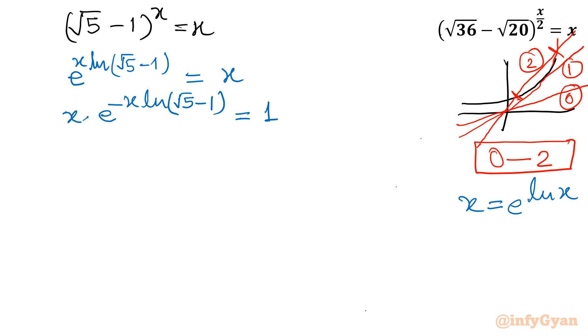Now next step I will consider. See its exponent is negative x ln root 5 minus 1. Here only x. So what is missing? I will multiply by that. So minus ln root 5 minus 1. Similarly I need to multiply in the RHS also by minus ln root 5 minus 1.